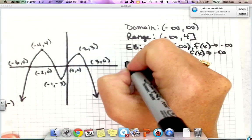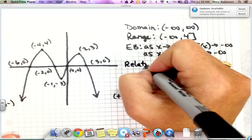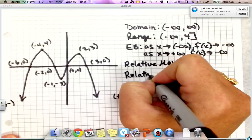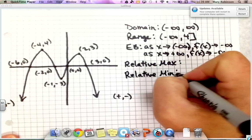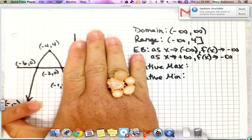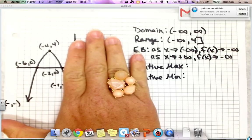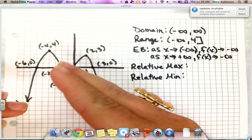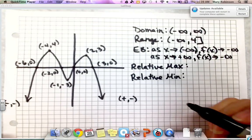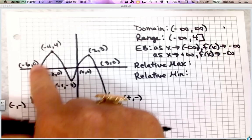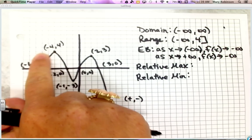Next, we define our relative max points and relative min points. Similar to quadratic functions that have a max or min at a vertex, when we have a polynomial function, they don't always have absolute maximum or minimum values. So if we have a turning point in our graph, we call that a relative maximum.